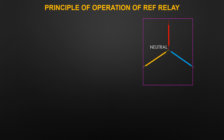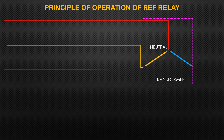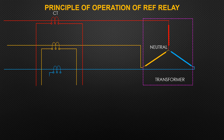Principle of Restricted Earth Fault protection: REF is a sensitive way to protect a zone between two measuring points against earth faults. The CT secondaries are wired to cancel each other's currents during through faults, and to drive all secondary currents to the relay when the fault is inside the protected zone.